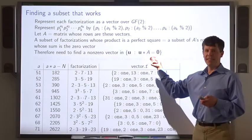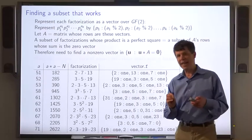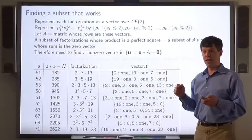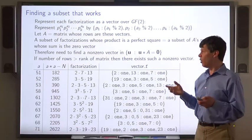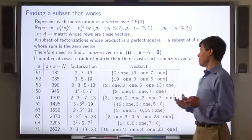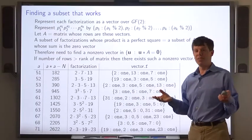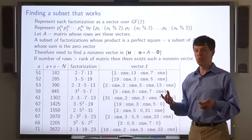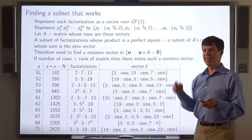This is the null space of A transpose. Now how can we guarantee that there is a non-trivial vector in this space? We just make sure that the number of rows is greater than the rank of the matrix. Since the number of columns is the number of primes that we started with, say 1,000, all we have to do is get 1,001 and we're guaranteed that there'll be some non-trivial vector in this set.